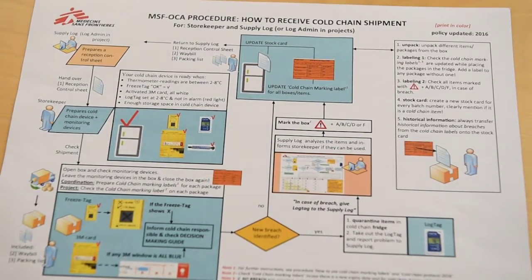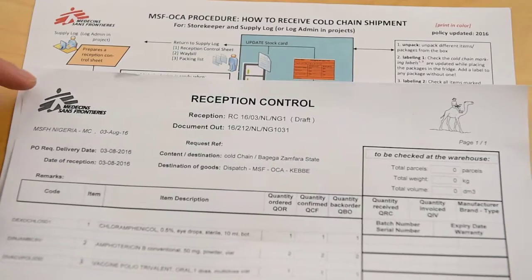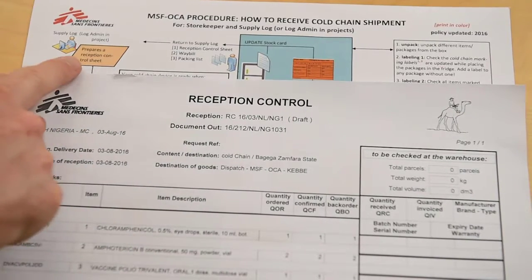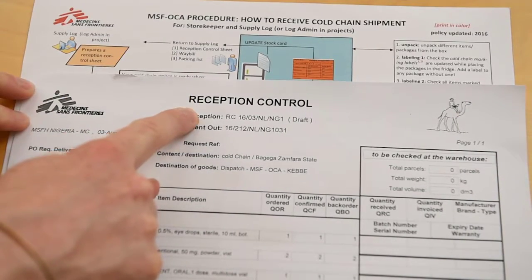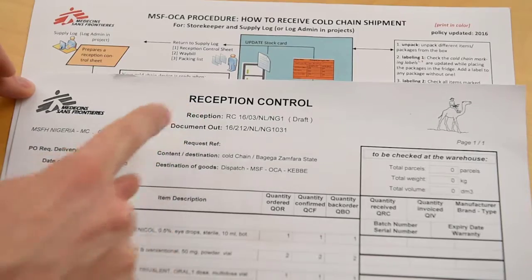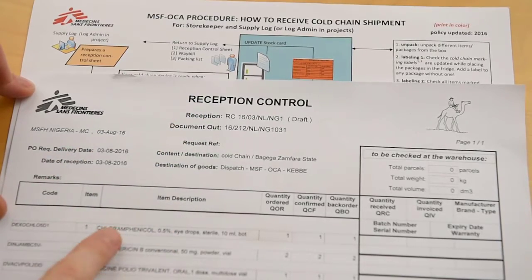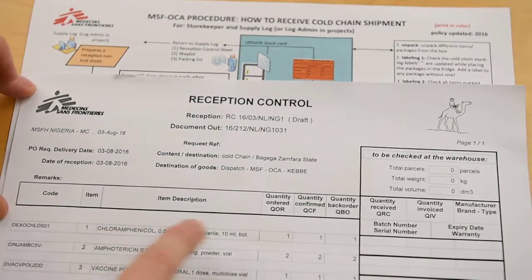The supply log prepares a reception control sheet, which we see here. We have chloramphenicol in a quantity of 1. We have amphotericin B in a quantity of 2.